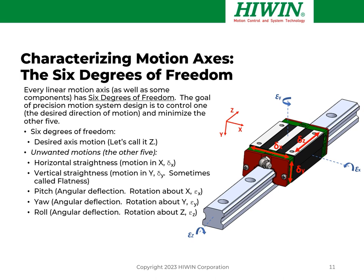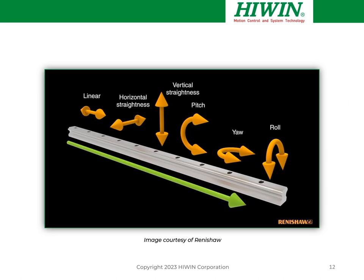The angular errors — pitch, yaw, and roll — are the ones that really add up and that we most want to minimize, because they especially contribute the most to Abbe errors. These are positioning errors caused by angular deflections in the motion system. Experienced motion engineers know how to design motion systems to minimize those errors. When you analyze all the errors in a multi-axis system, it starts to get really complicated. All of those components are used to form the error budget.